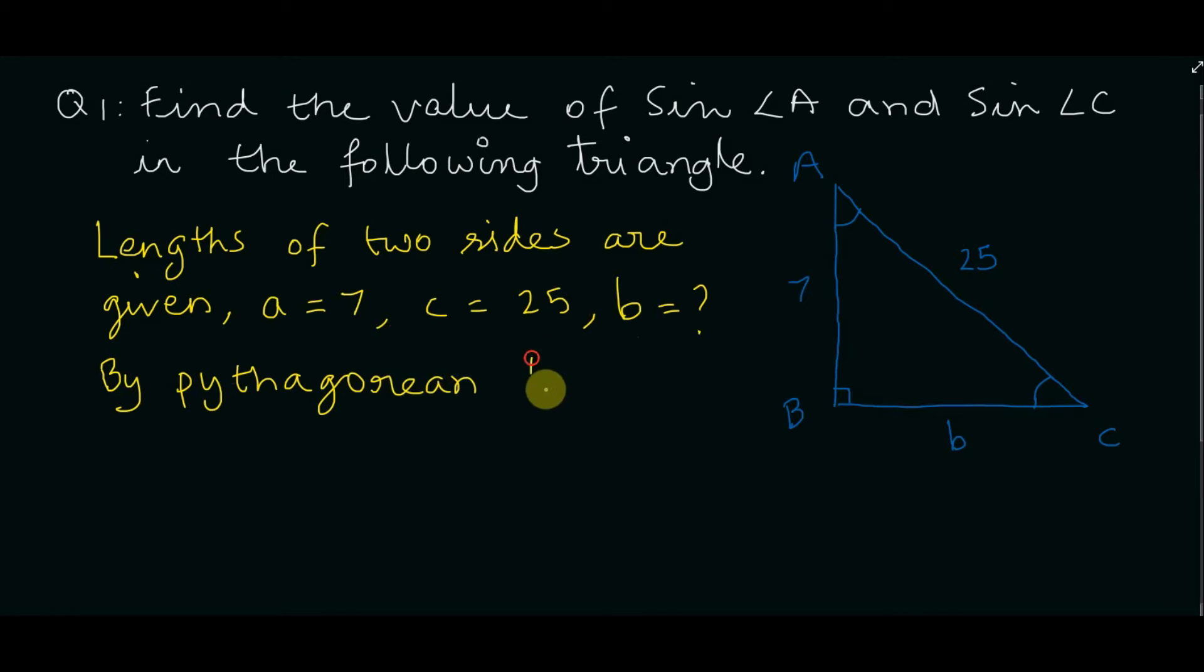So by Pythagorean theorem, a² + b² = c². Replacing values of A and C, we get 7² + b² = 25².